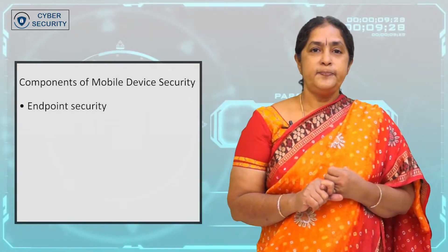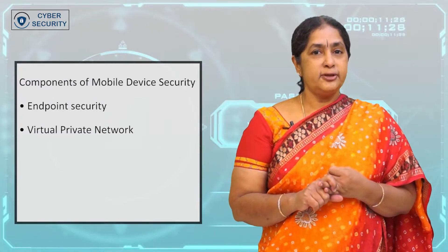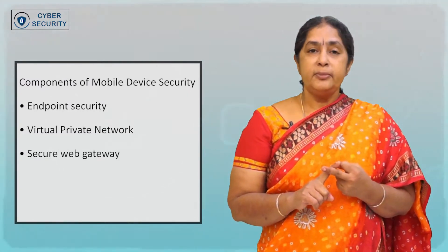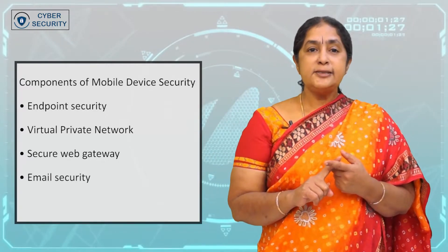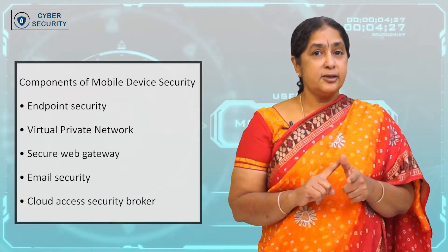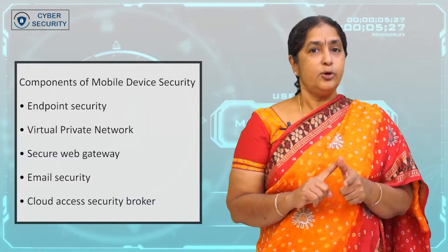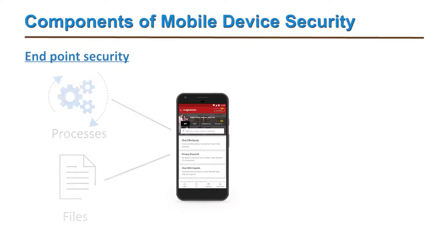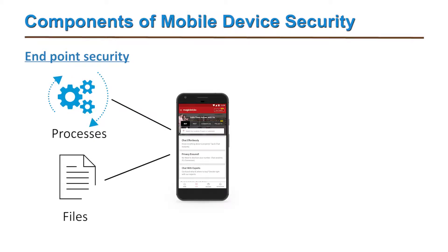The five components are: endpoint security, virtual private network (VPN), secure web gateway, email security, and cloud access security broker. Let's see each one. Endpoint security monitors the processes and files in a mobile device during network access.